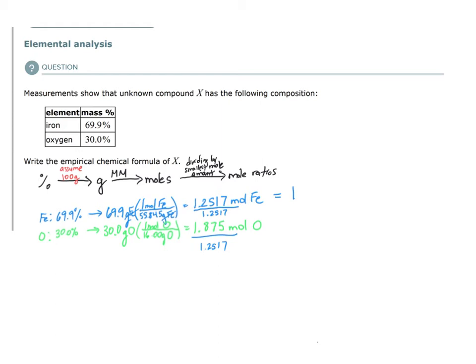We set this to 1 because this is the element present in the smallest amount. Dividing 1.875 divided by 1.2517, I get 1.498. I found the smallest mole amount and divided everything by that smallest mole amount. The mole ratio that I get, for in this case, if I divide it by itself, I get 1 because this was the element present in the smallest mole amount.